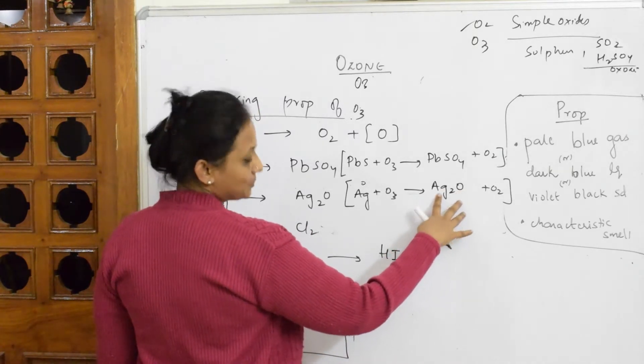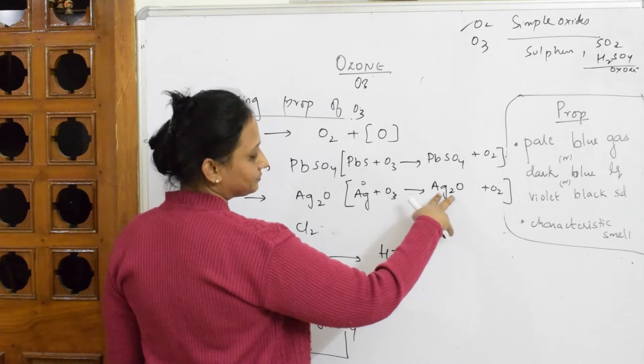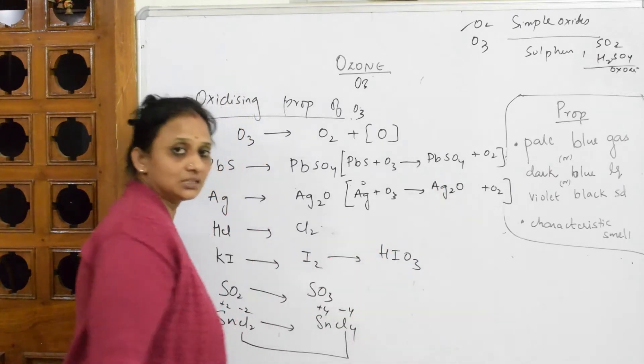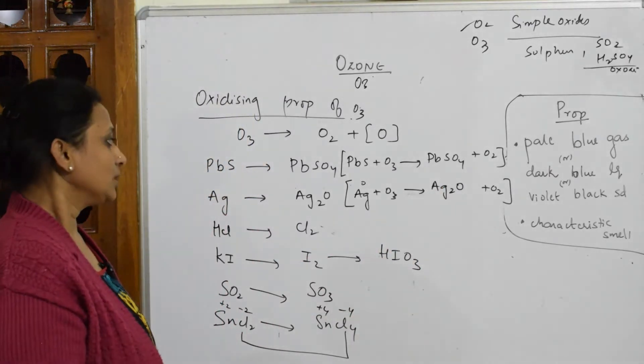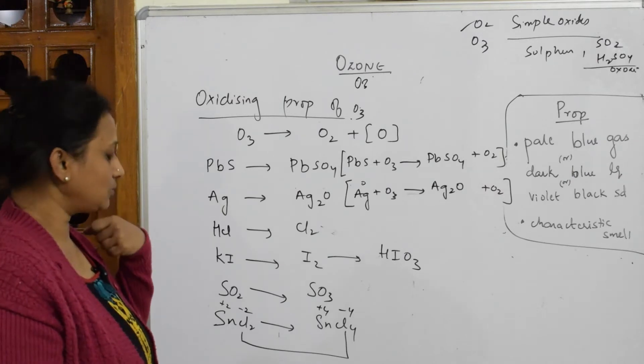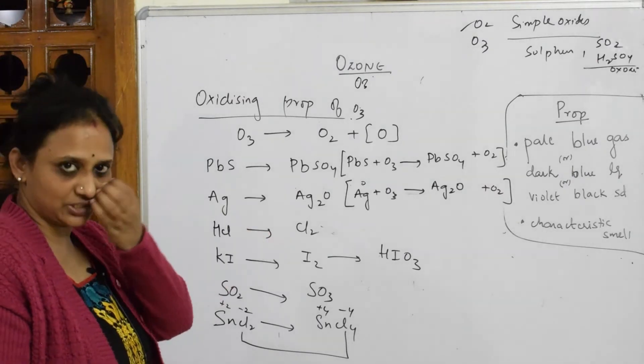So 2 silvers are plus 2 done. So what are we saying? It is increasing oxidation number done. From 0 to plus 2.